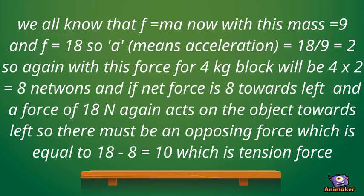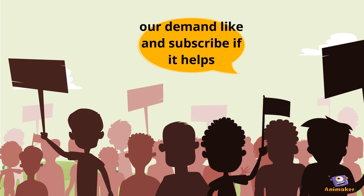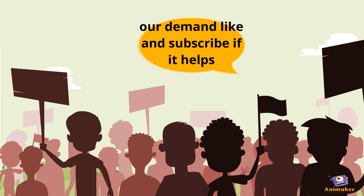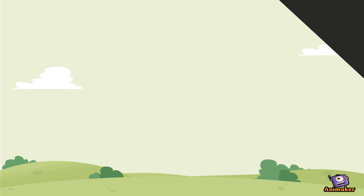The net force applied for the 4 kg block will be 4 into 2, which is equal to 8N. If 8N is the net force and 18N is the force applied, there will be some force acting in the opposite direction, which is equal to 18 minus 8, equal to 10N. Thank you.